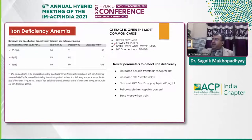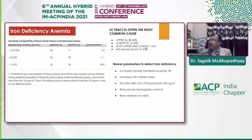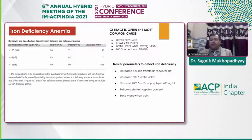Regarding iron deficiency, the GI tract is the most common cause. In senescent people, upper GI is responsible for 20 to 40 percent of cases, lower GI for 15 to 30 percent of cases, and both upper and lower GI for 1 to 15 percent. About 10 to 40 percent of cases have no source found, mainly due to bleeding from the small gut where scopes cannot reach. Among these, about 50 percent involve ulcer or pathology in Meckel's diverticulum or diverticulosis, and capsule endoscopy plays a role in diagnosing such cases.